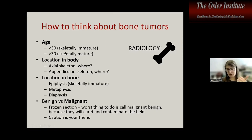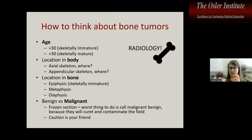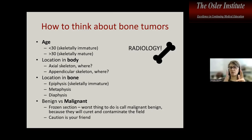Bone tumors can be categorized by age of occurrence, location in the body, and location within the bone to help determine benign vs. malignant. On frozen section, caution is key. The worst outcome is calling a truly malignant tumor benign — this leads to contamination of the surgical field, potentially eliminating limb-sparing surgery and requiring amputation. If uncertain, say you don't know and stop.